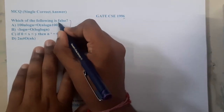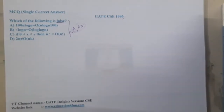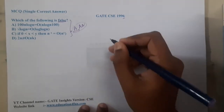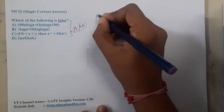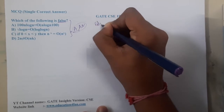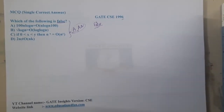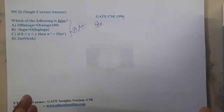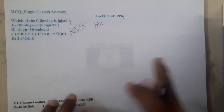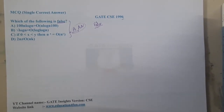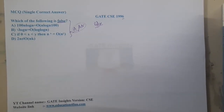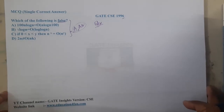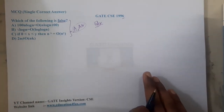The question asks us to find which of the following is false. Whenever you are reading these kinds of questions, even in your GATE examination, make sure you write the word 'false' on your scribble pad, because you might forget and end up picking the correct option instead.